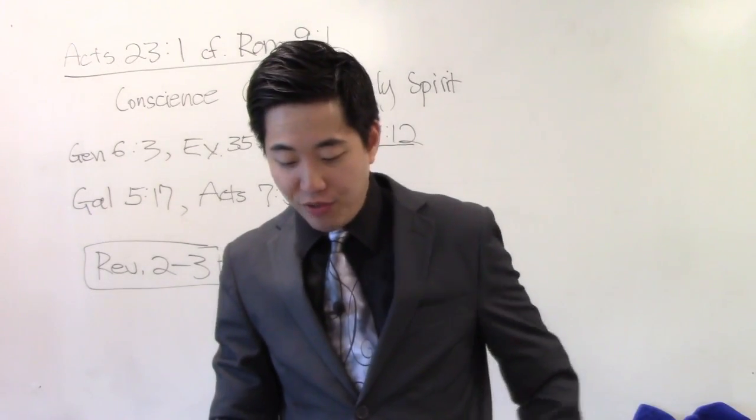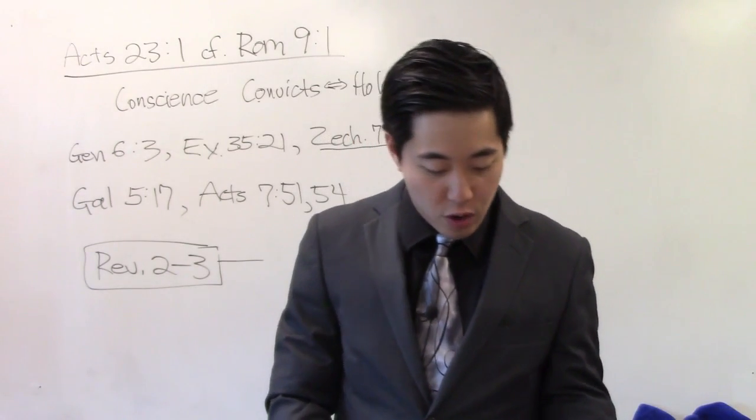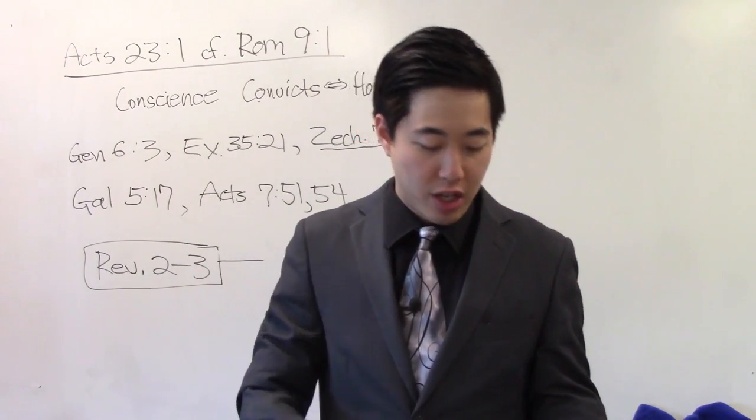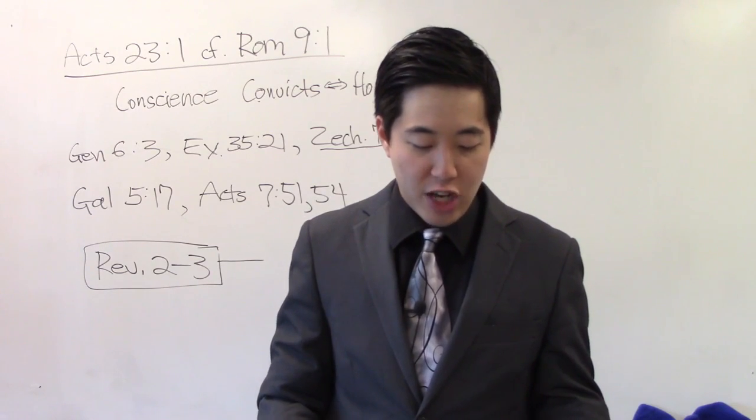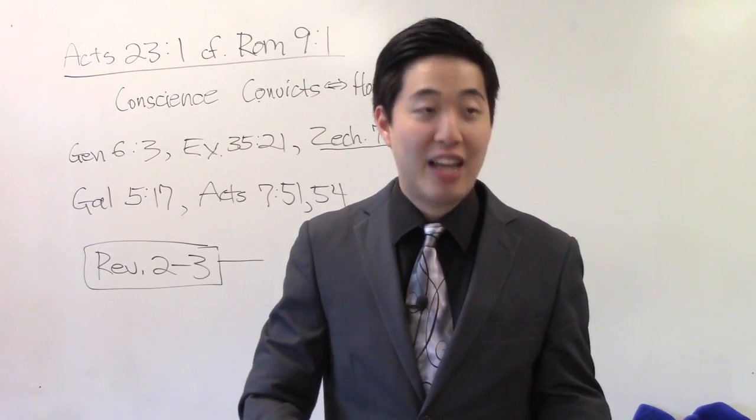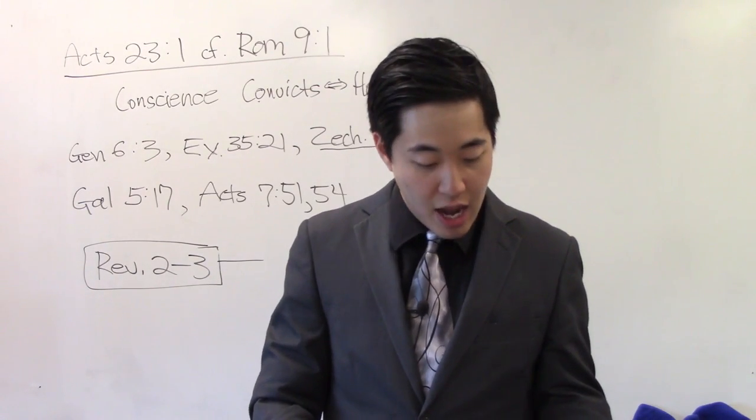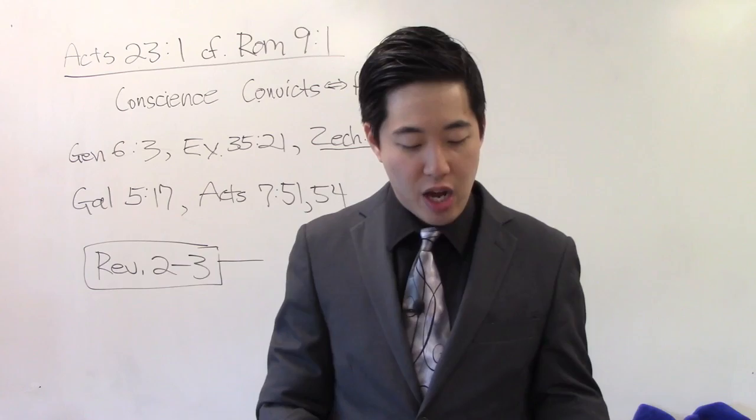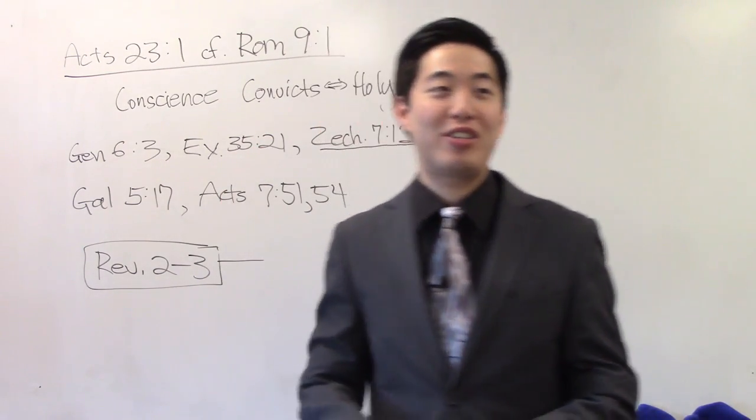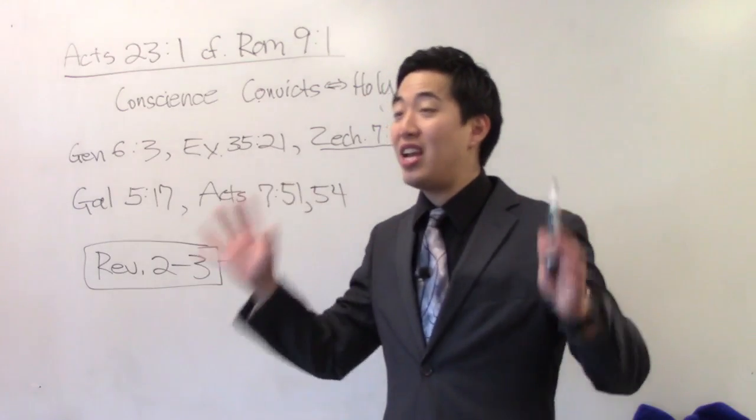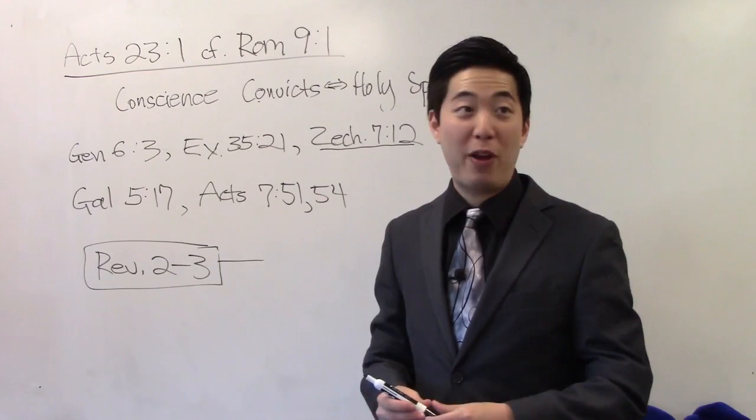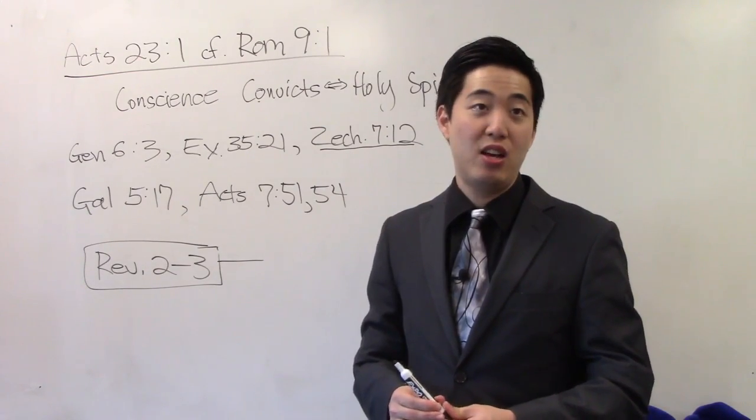But not only that, look at Galatians 5:17. The verse says, this proves every Christian has it. Every saved Christian has it. Look at this. For the flesh lusteth against the spirit and the spirit against the flesh. See that? And these are contrary the one to the other, so that ye cannot do the things that ye would. You see that? You can't do the things that you would. Why? Because you got not just flesh in you, you got a spirit in you that's resisting it.